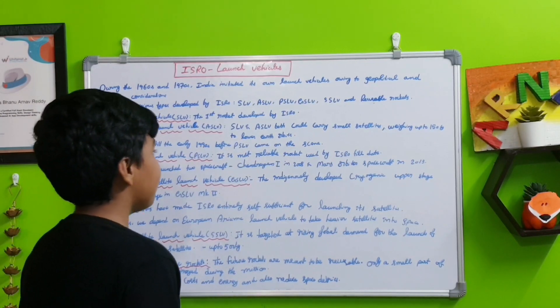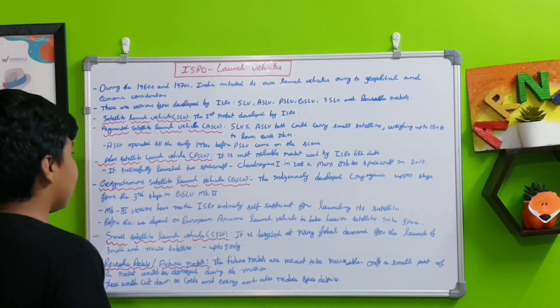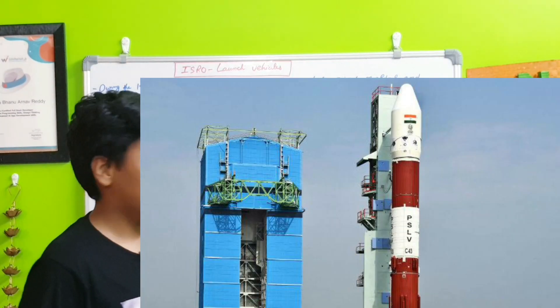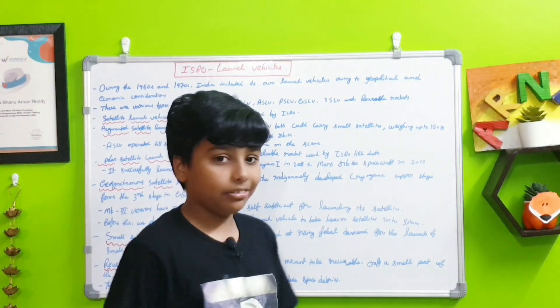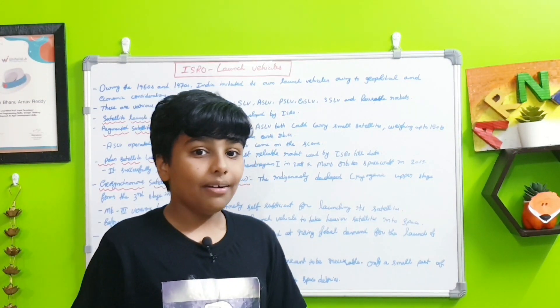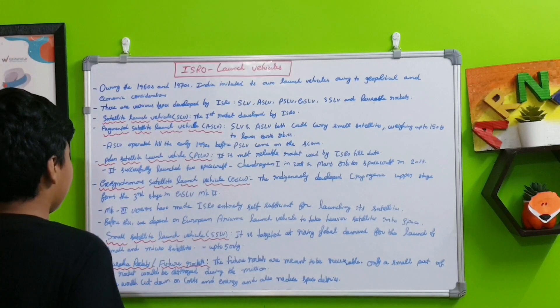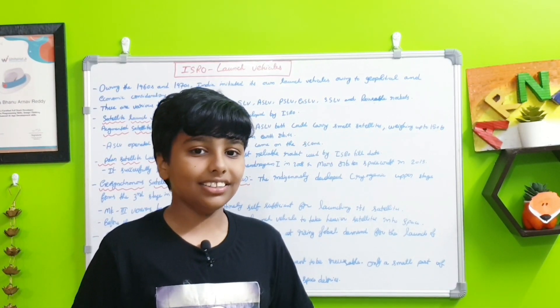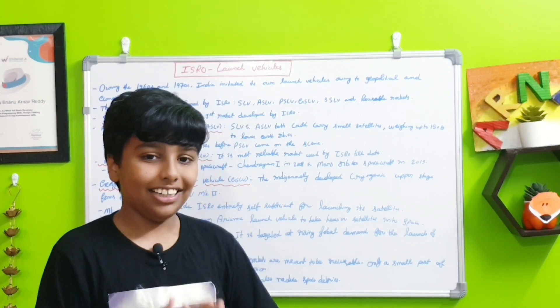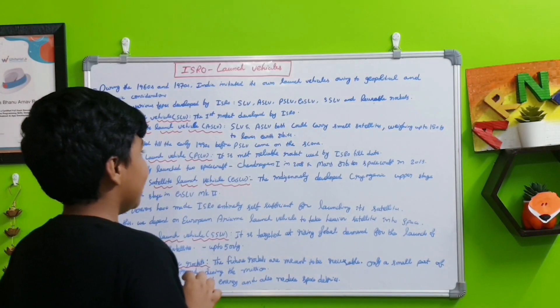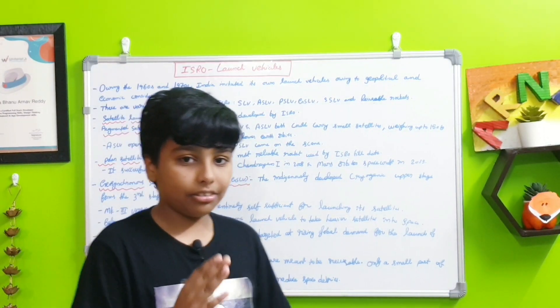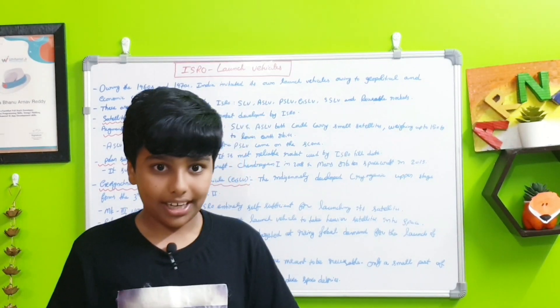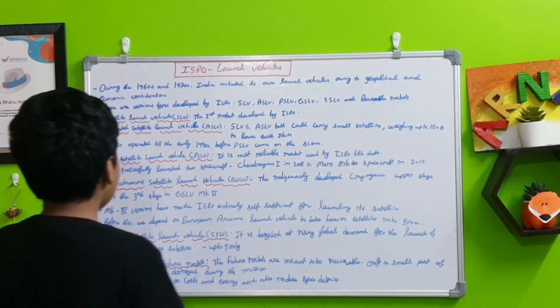It is the most reliable rocket used by ISRO till date. It successfully launched two spacecrafts: Chandrayaan-1 to the moon in 2008 and Mars Orbiter spacecraft Mangalyaan to Mars. This PSLV sends many things including low earth orbit satellites and also to space, going to the Moon and Mars instead of just orbiting the Earth.